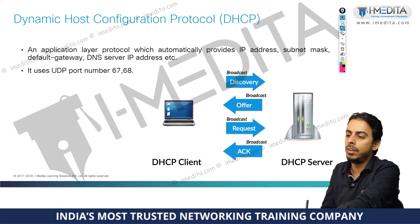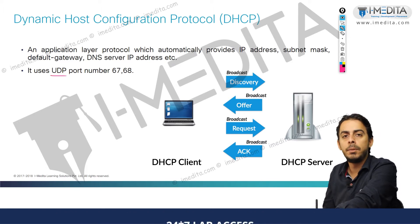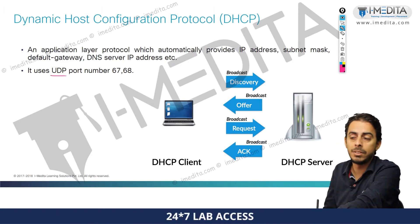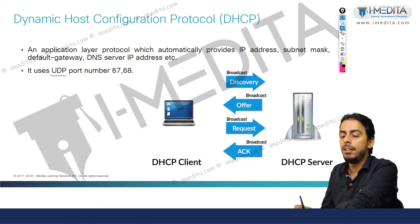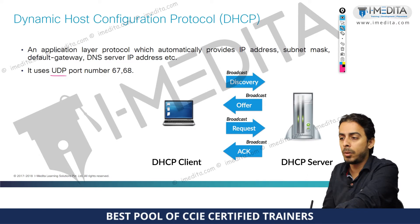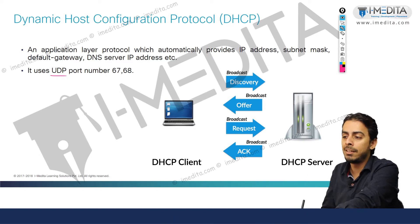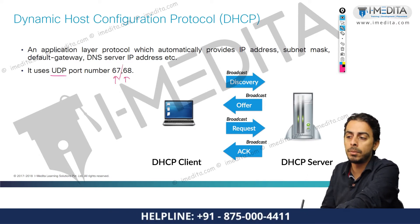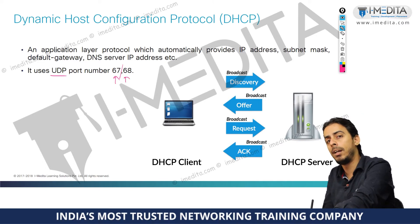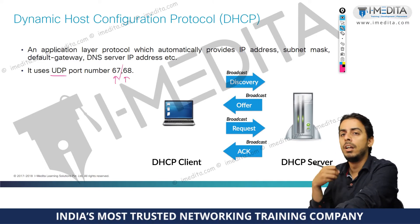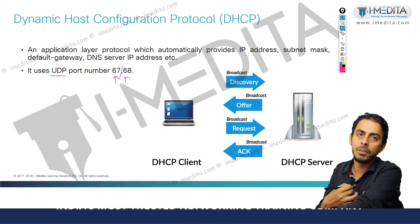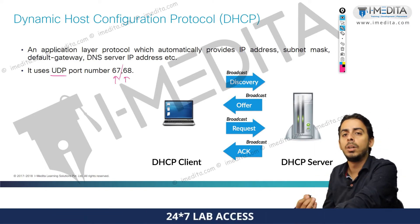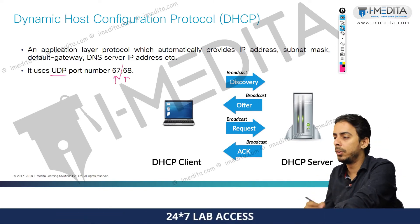At the transport layer, DHCP utilizes UDP services — it is a UDP-based protocol. There are two port numbers used by DHCP: port 67 and port 68. One port number is for the server and one is for the client.